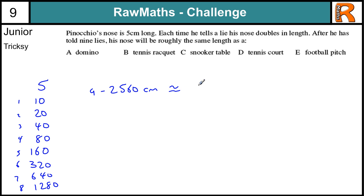So that's approximately, or is, twenty-five point six metres. So which of these is about twenty-five point six metres? Well, a domino is obviously in centimetres. Tennis racket, maybe a metre, not that. Snooker table, the standard snooker table is twelve feet long, so not twenty-five metres. A football pitch is about a hundred metres, so that leaves us with the tennis court, D.